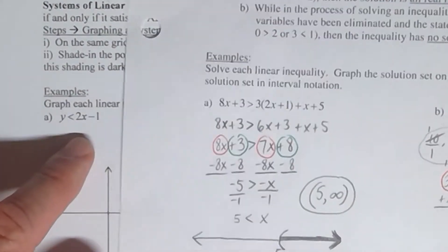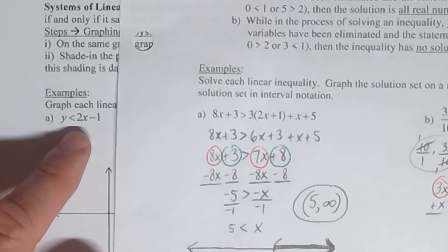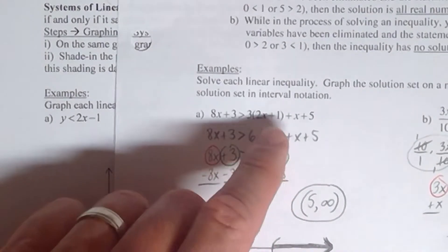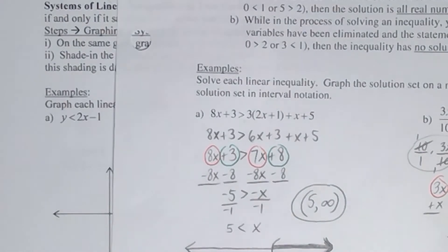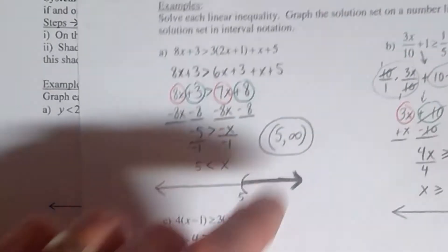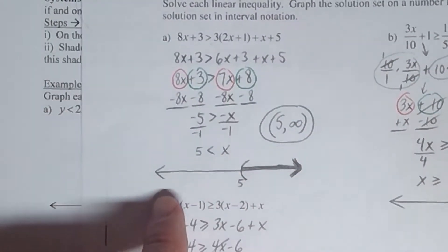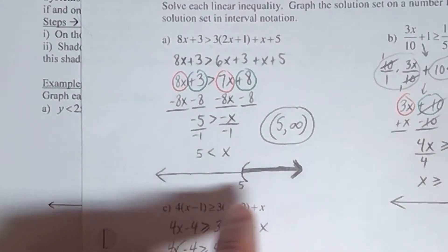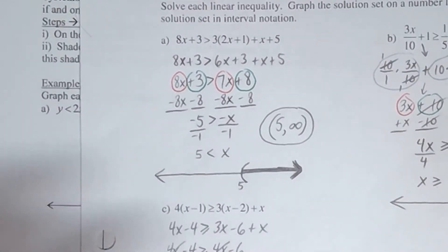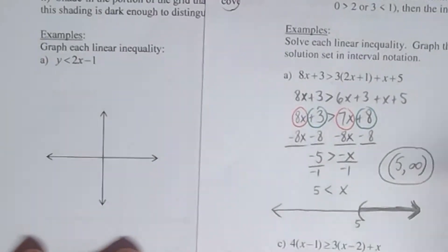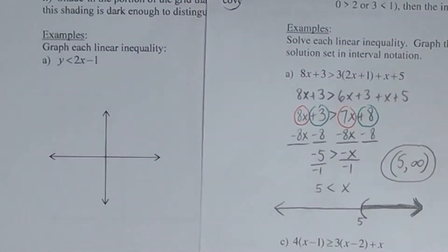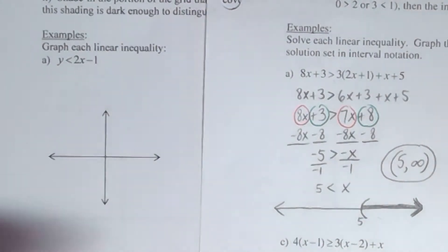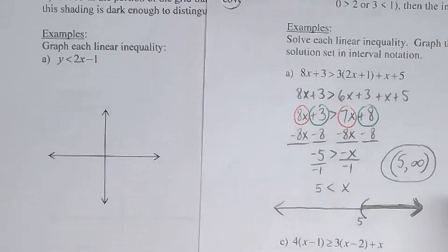We have inequalities again here. The difference, though, if you look at the problem side by side, is that this one has two variables and this one has one. That makes a big difference — with one variable you just have a number line, kind of like an x-axis. Whereas when you have two variables, you have an x-axis and a y-axis — two axes instead of just the one number line.